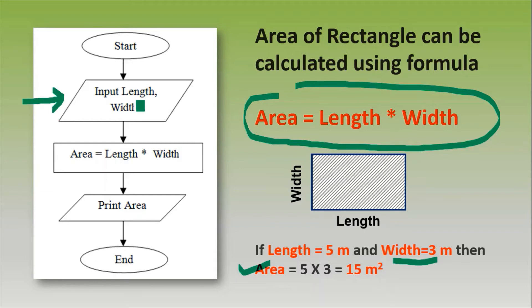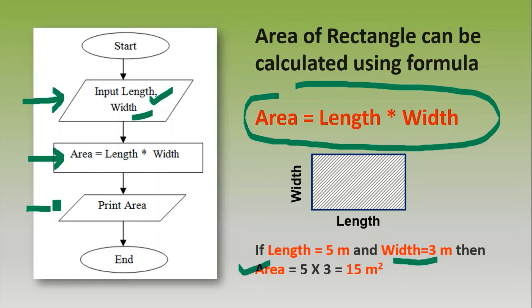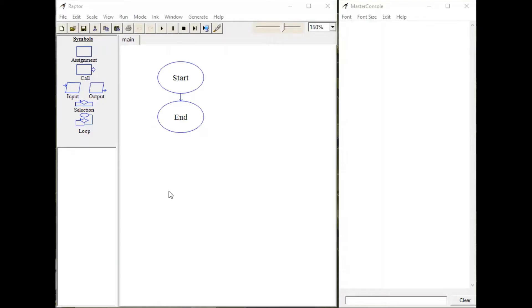By drawing a traditional flowchart, we will take an input symbol to read length and width, then a process symbol to calculate the area using this formula, and one output symbol to print the calculated area.